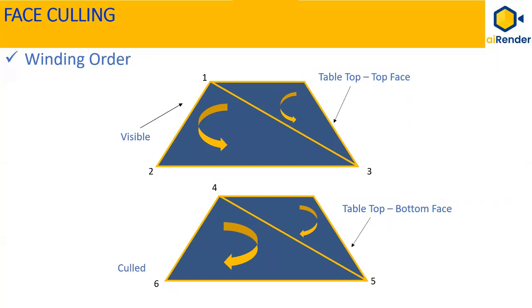Similarly, the vertices of one of the triangles on the bottom side of the table top are also numbered from 4 to 6 in counter-clockwise direction if you assume that the triangle is facing you, in this case, from the bottom side. But when you view from the top, the winding order of the vertices of the bottom face triangle becomes clockwise.